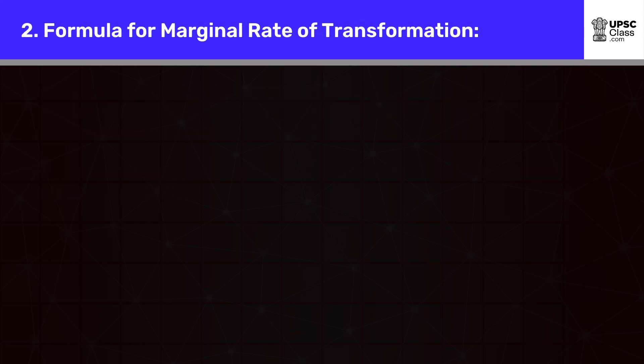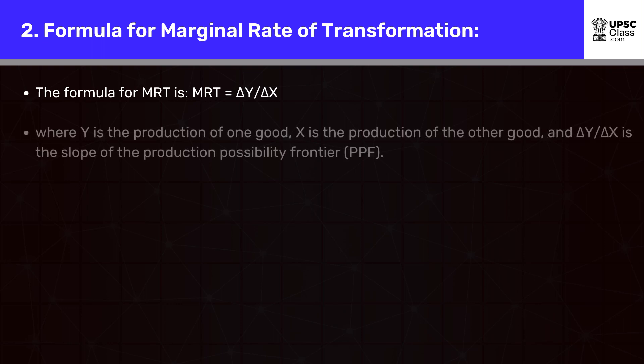The formula for MRT is: MRT = Δy/Δx, where y is the production of one good, x is the production of the other good, and Δy/Δx is the slope of the production possibility frontier, PPF.